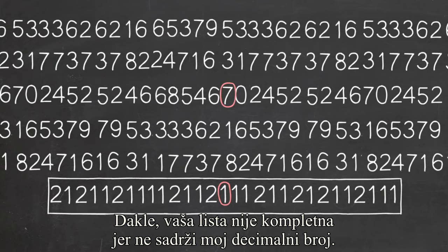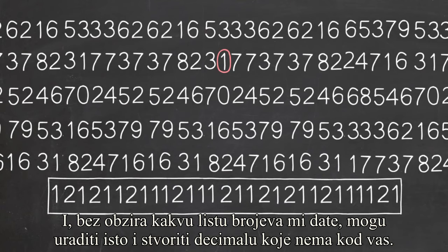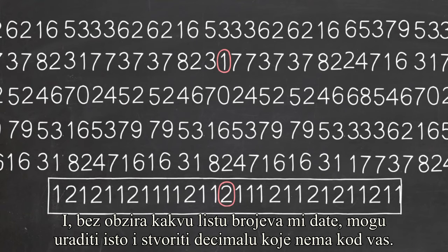Your list is incomplete. It doesn't contain my decimal number. And no matter what list you give me, I can do the same thing and produce a decimal that's not on that list.